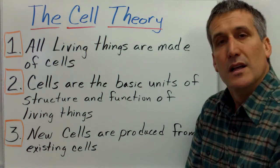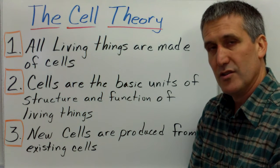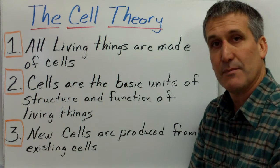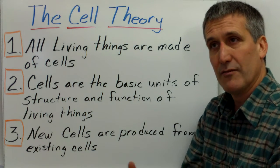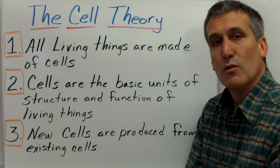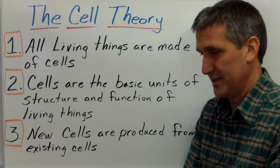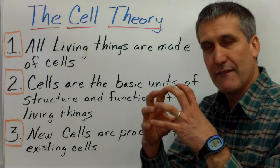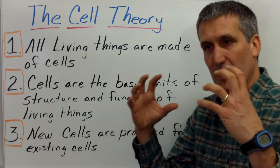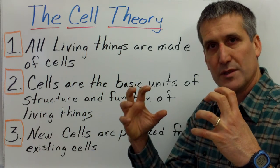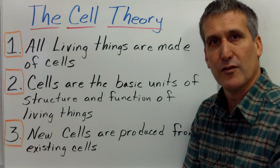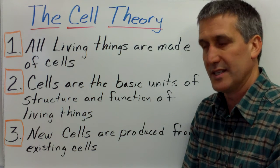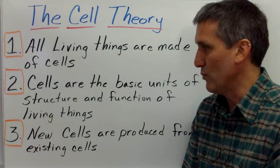The third part of the cell theory is: new cells are produced from existing cells. That means that all of the cells that exist in the biosphere today came from cells that existed before them. We can use our own bodies as an example of this. All of the trillions of cells that make up your body came from that first zygote cell, which came from two cells from your parents — the egg cell and the sperm cell — which came together during fertilization to make the zygote. So all of your cells came from cells that existed before them, and all other species operate the same way.